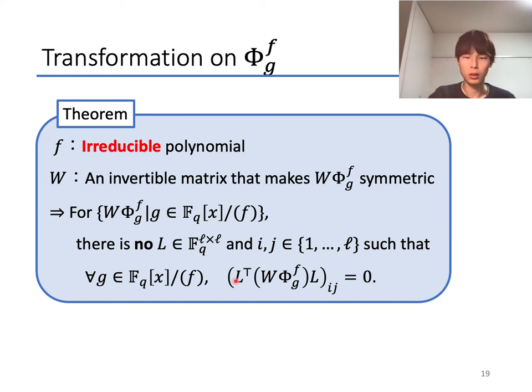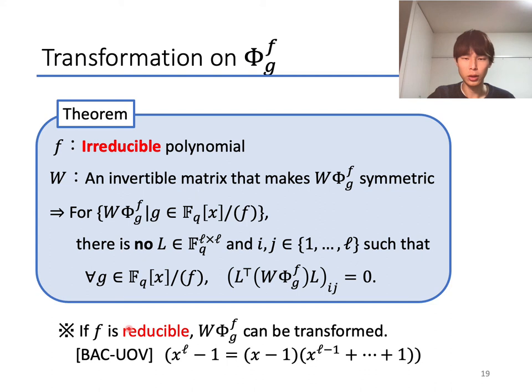On the other hand, if f is reducible, then there exists such a transformation. Actually, in the case of a circulant matrix, x^ℓ - 1 is reducible like this, and thus there exists a transformation shown in the previous page.